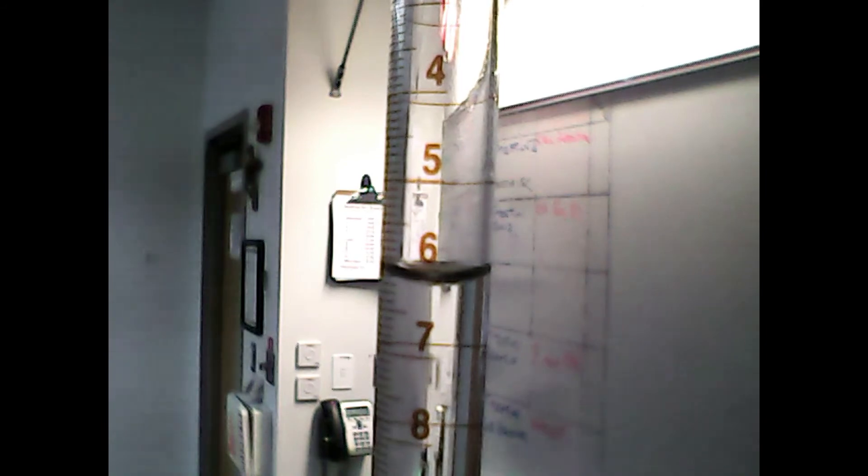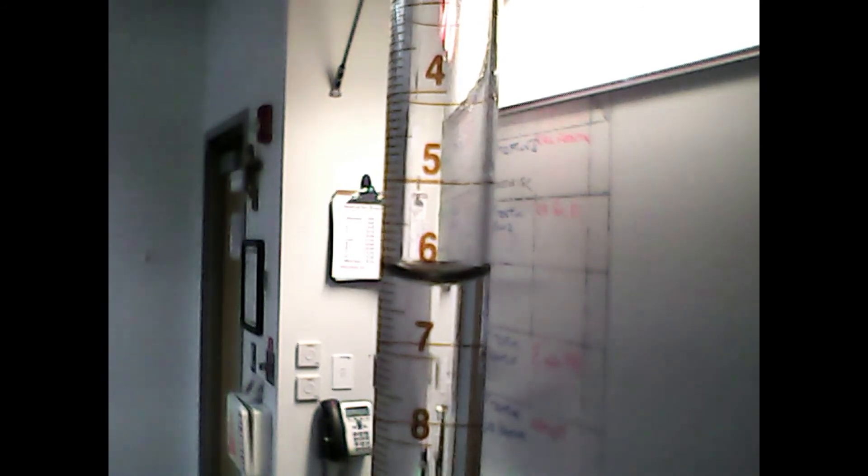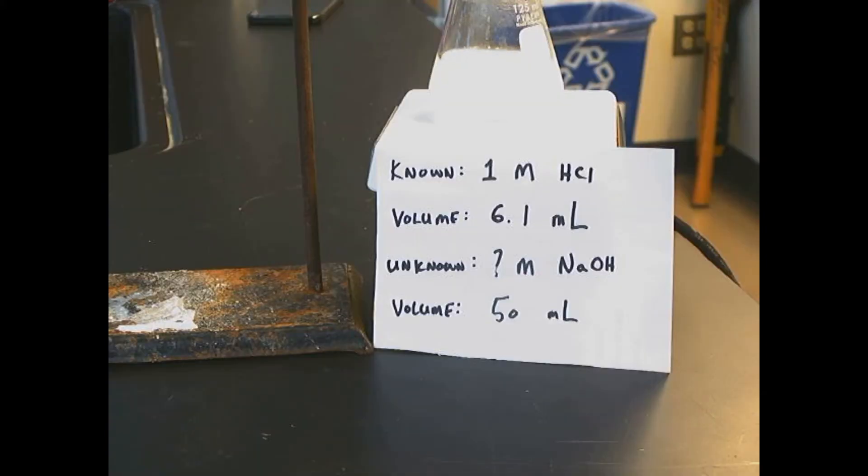Reading the burette, just as the solution turns back to clear, means we added 6.1 milliliters of our acid. So now we have a known volume of known concentration of our hydrochloric acid, and we have an unknown concentration but a known volume of our base.